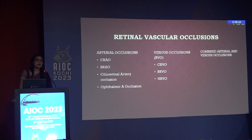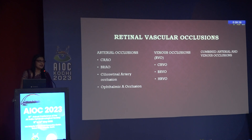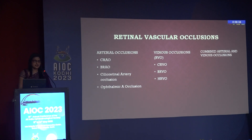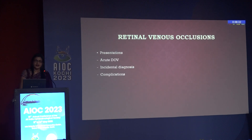You can have arterial occlusions, you can have venous occlusions, you can have combined occlusions. The arterial occlusions include central retinal, branched retinal, cilioretinal artery and ophthalmic artery occlusions. We'll go to venous occlusions first.